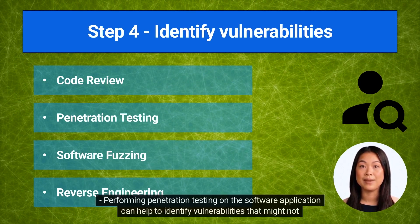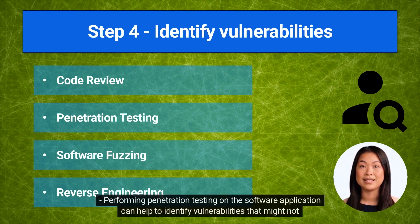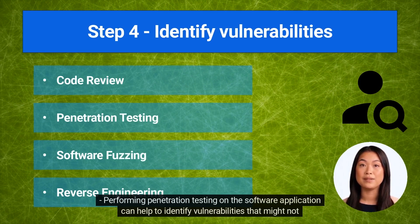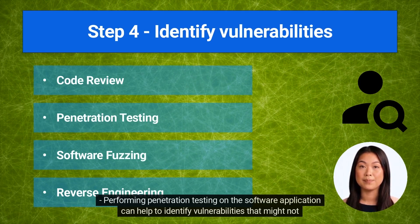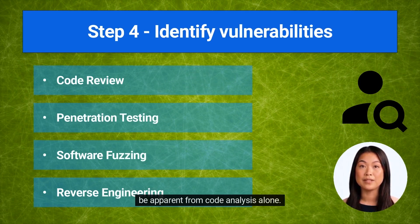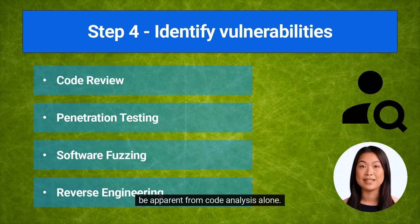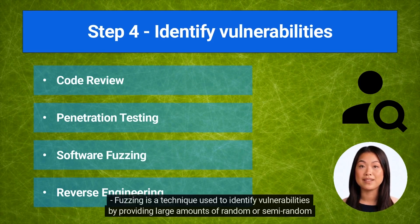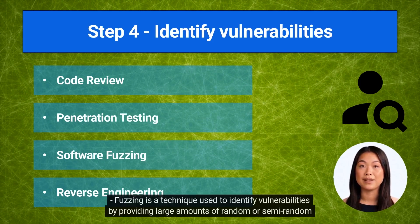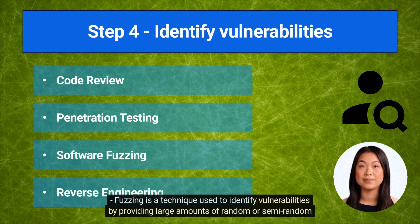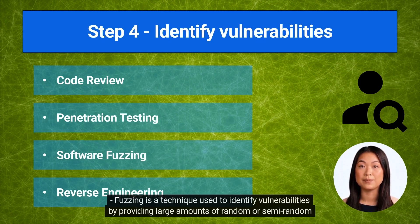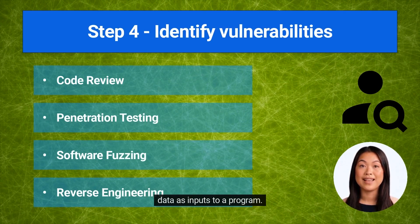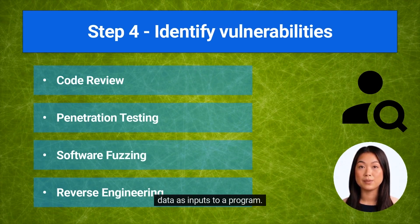Performing penetration testing on the software application can help to identify vulnerabilities that might not be apparent from code analysis alone. Fuzzing is a technique used to identify vulnerabilities by providing large amounts of random or semi-random data as inputs to a program.